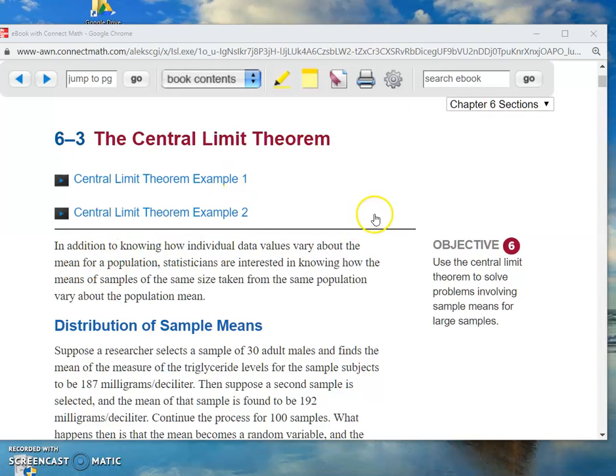So what he's saying here is in addition to knowing how the individual data values or the data points vary about the mean for a population, statisticians are interested in knowing how the means of samples of the same size taken from the same population vary about the population mean. When you first read that sentence, I bet you it was confusing. So what he's saying there is we care about how individual data points act, but we also care about how the X-bars act. Do you remember what X-bar means? X-bar is the mean of a sample.